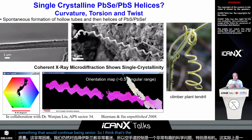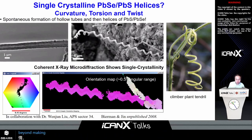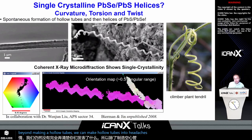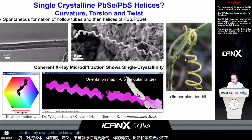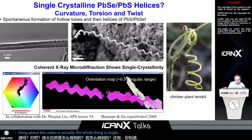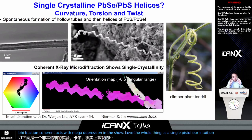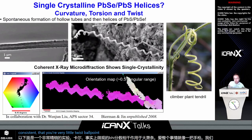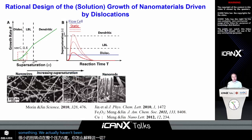I'll show one thing I'm embarrassed to say we've looked at for 12 years and still haven't completely figured out or published. Beyond making hollow tubes, we can make hollow tubes into helices. To define a helix geometrically you need curvature, torsion, and twist, and helices are everywhere in nature. The fascinating thing about this zinc oxide helix is that the whole thing is a single crystal, shown by coherent X-ray macrodiffraction. The orientation is very consistent with very little twist — about 0.5 degrees throughout the whole structure. How do you explain all of this? That's still something we haven't been able to do in the last 12 years.